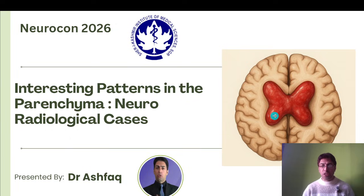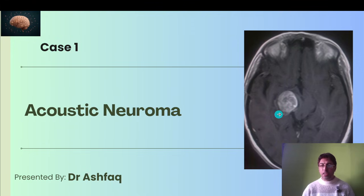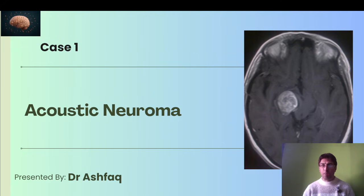Case one: acoustic neuroma. You can see a lesion here. We are well aware of the anatomical entity — the CPA, the cerebellopontine angle. In relation to the cerebellopontine angle, unfortunately, we sometimes have certain masses that are solid and nodular, and they are given the name acoustic neuroma.